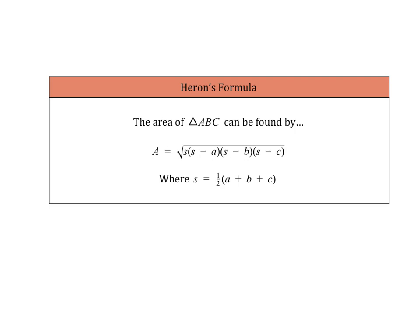The last topic is Heron's Formula, used to find the area of a triangle when you only know the three side lengths. The formula is: Area equals the square root of s times (s minus a) times (s minus b) times (s minus c), where a, b, and c are the side lengths. The variable s is defined as half the sum of all three sides. First find s, then plug into the formula to get the area.